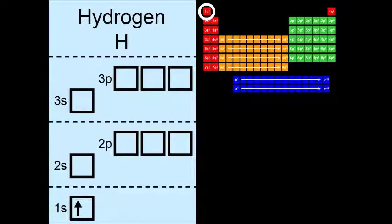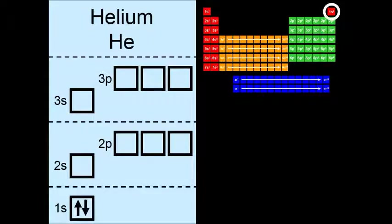Hydrogen, of course, has only one electron in a 1s orbital. So we know the electron configuration for hydrogen is 1s1. And the electron configuration for helium is 1s2. And as you can see, I'm highlighting the location of the element on the periodic table so you can follow along.